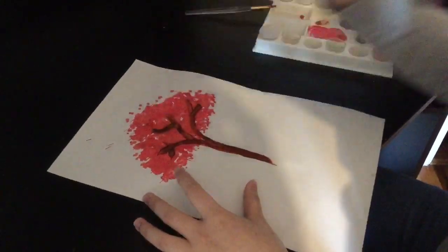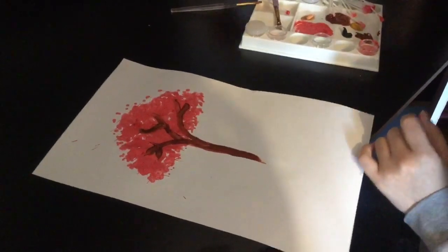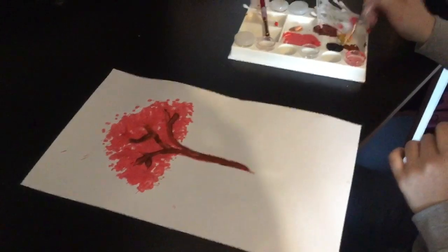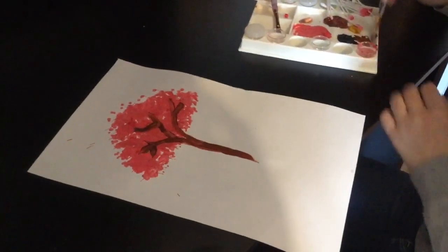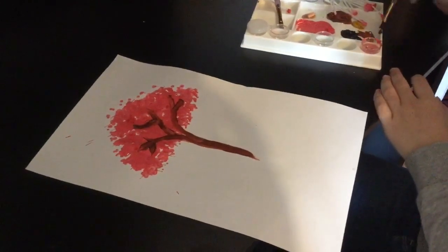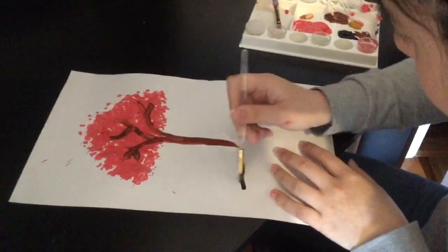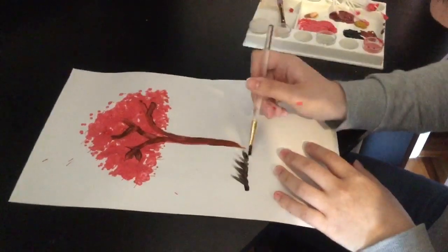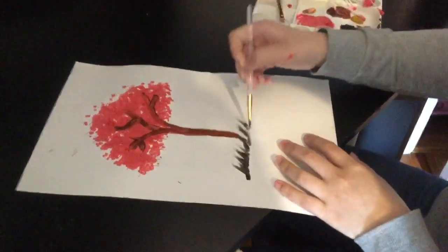Add a little branch here. Now our tree is done. Now we could draw some grass. I'm going with a dark grass color. So basically, you draw like this, and you go like this, spiking up.